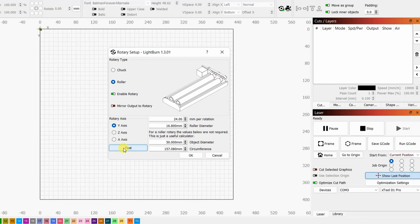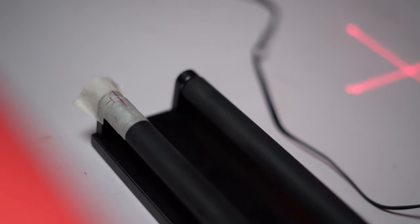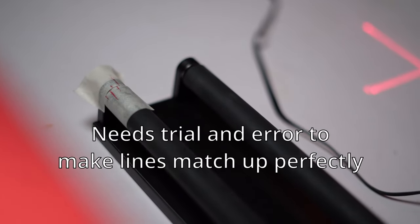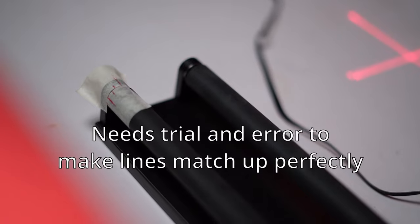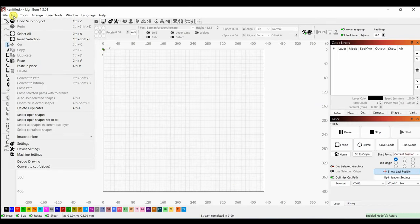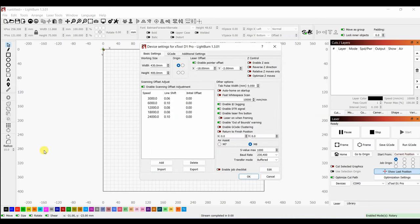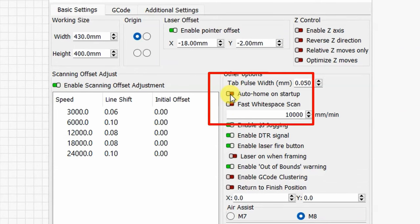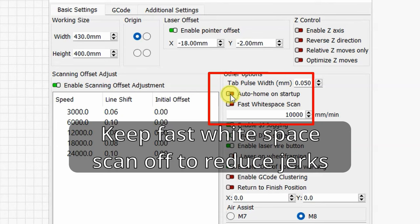Now back to setting up your rotary. If the roller is not completing one hole rotation, the value you set is too low. You will have to do some trial and error to make the lines match up perfectly. You will also see an option called mirror output to rotary. We will come to it in the next step. There is one more important thing to remember here. You have to go to edit, device settings and disable auto-homing on startup if you have it turned on. Also, it is a good idea to keep fast white space scan off to reduce jerky movement.